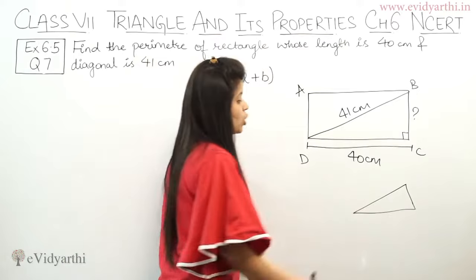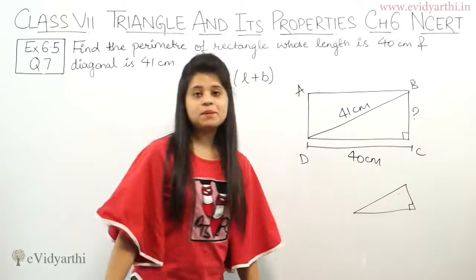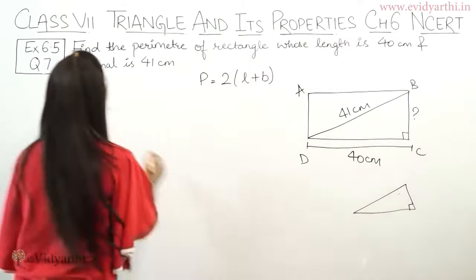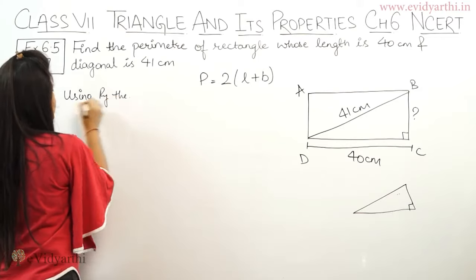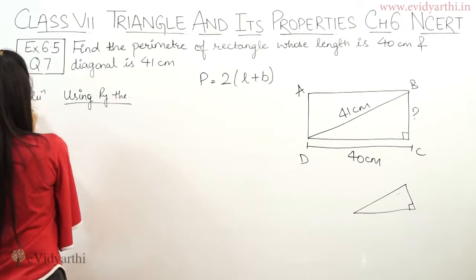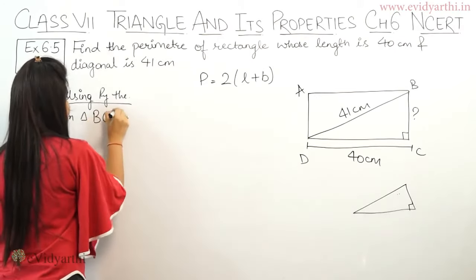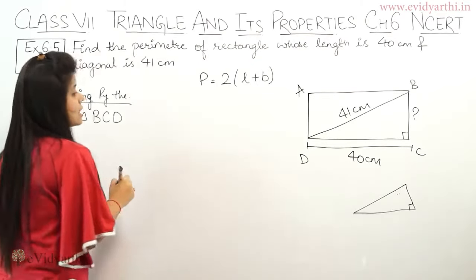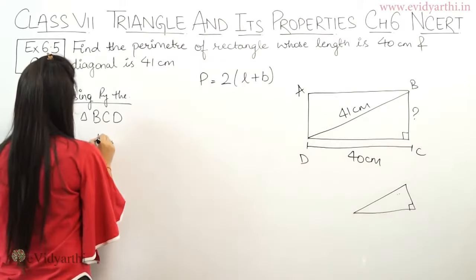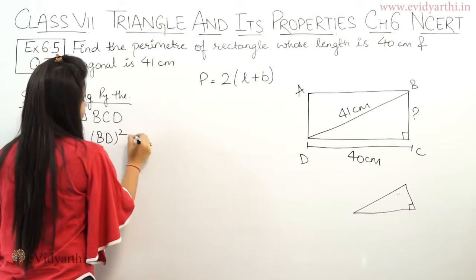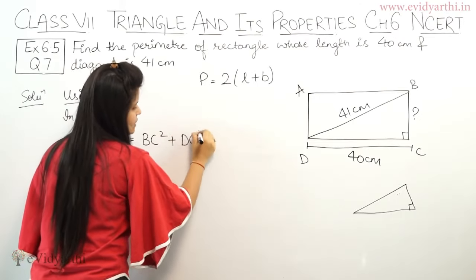So we have a right triangle, we can use Pythagoras theorem. With this help we can find BC. First of all, using Pythagoras theorem in triangle BCD, we can use Pythagoras theorem. Hypotenuse BD, so BD² equals BC² plus DC².